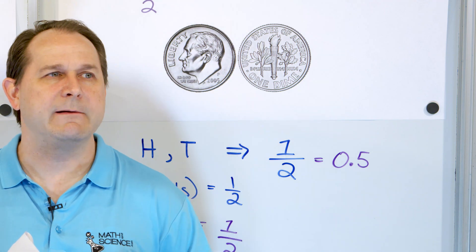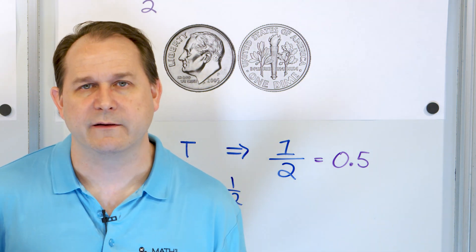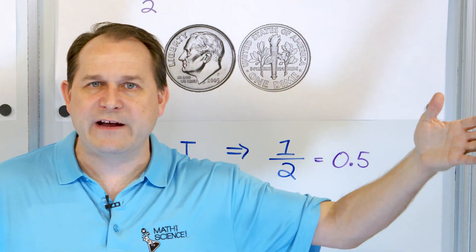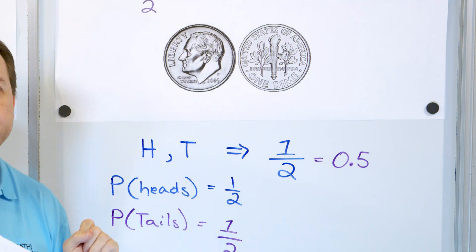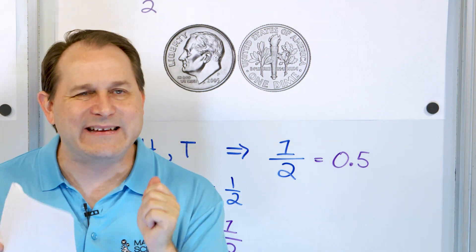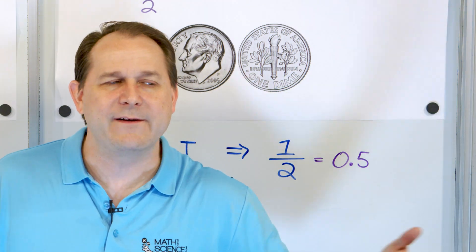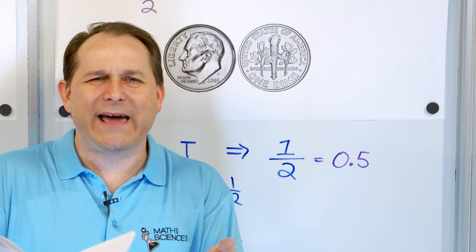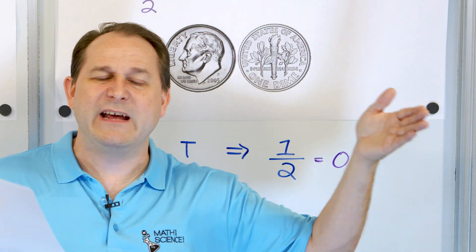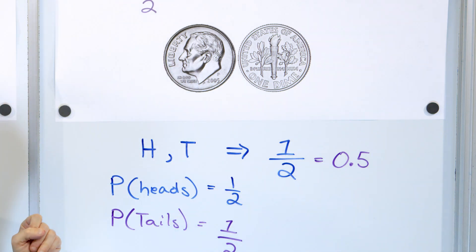But if you flip it a million times, or 10 million, or 100 trillion times, the more flips you do, the closer our observation will work out to be 50-50 heads and tails. Probability is telling you that if you do an infinite number of flips, what should you expect? On average, if you do a large number of flips, it should be half and half because the probabilities came out to half and half.